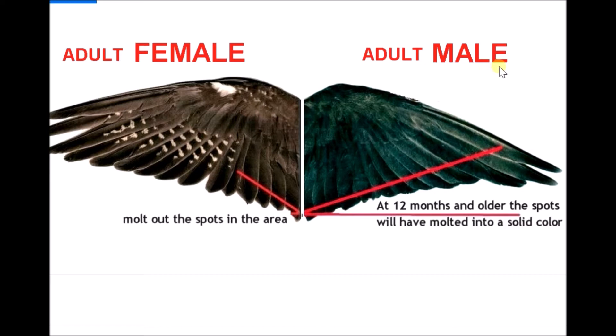If you take the adult male, you can see all the spots have disappeared. Generally after one year, adult males will not have spots inside their wings.